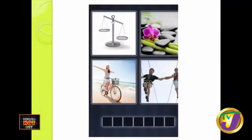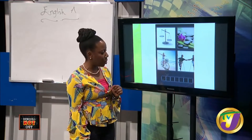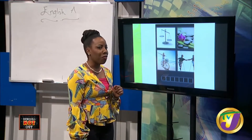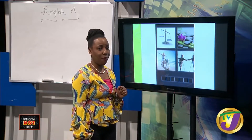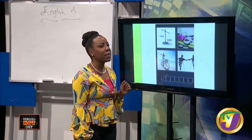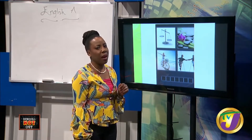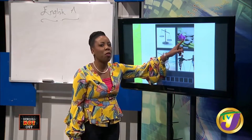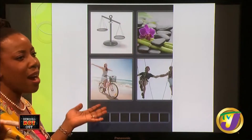Let's look at another one. What's the word that is common? We have a scale, some bamboo and stones by a river with a flower, a woman riding her bicycle, and a couple doing tightrope walking. The word begins with B — a seven-letter word. That's balance. When you think about spiritual and emotional balance, that's what we get from this picture.